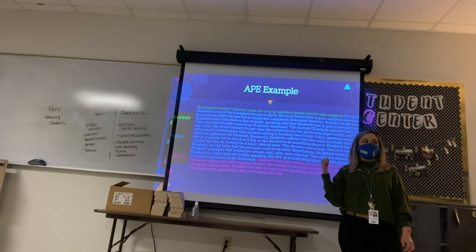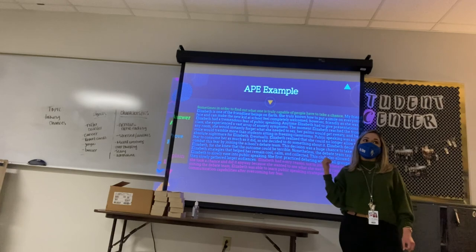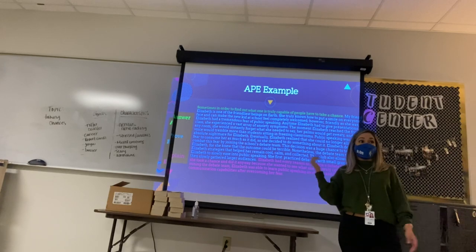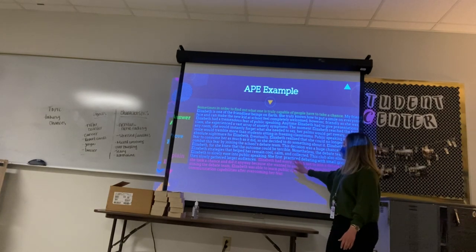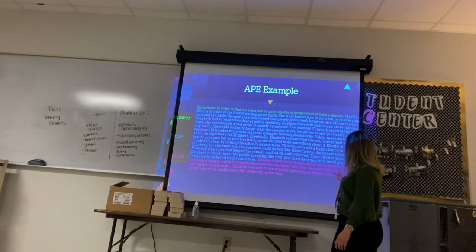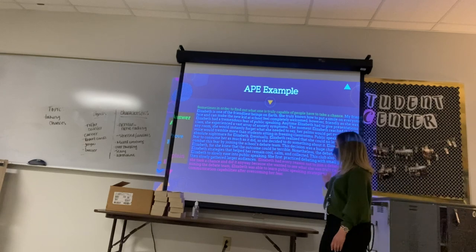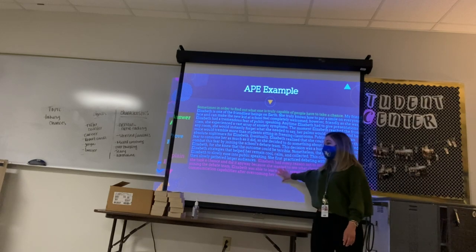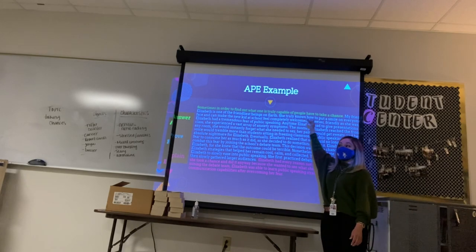That is my example. Is it detailed? Yes — I don't just say my friend was scared to speak in public so she joined the debate team and got over it. I added lots of detail. That's how your example should be. Then in purple, my explanation: 'Elizabeth had every reason not to join a debate team, but she took a chance anyway because she wanted to see what she was truly capable of. By joining the debate team, Elizabeth was able to learn public speaking strategies and discover her true communication capabilities after overcoming her fear.' So I explained why this is important. You need all three parts.